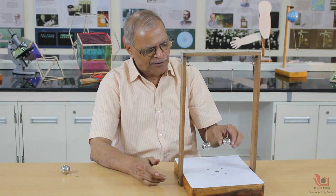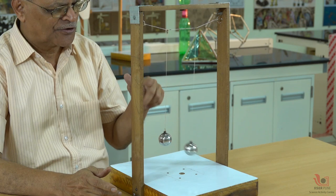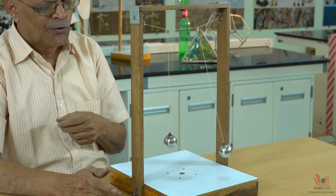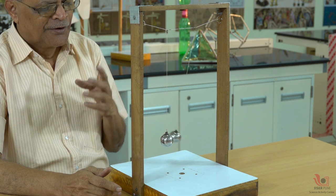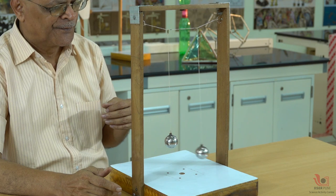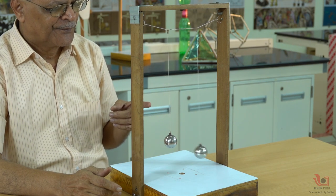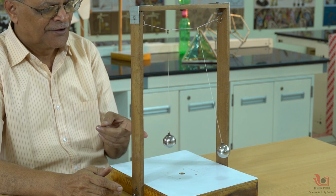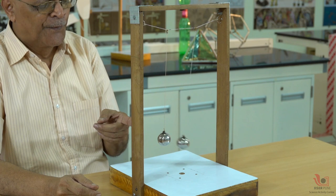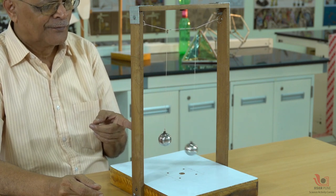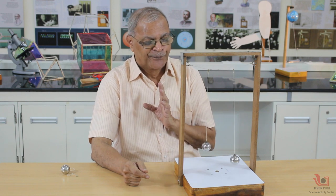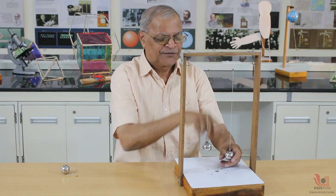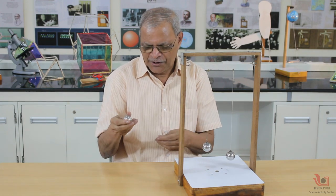If I energize one pendulum, we can observe that when this pendulum keeps on oscillating, we observe that the amplitude of this pendulum goes on increasing and then it goes on decreasing and stops. This keeps on repeating several times, and it happens because the lengths of the two pendulums are different — they do not have any resonance.